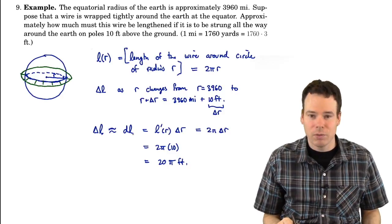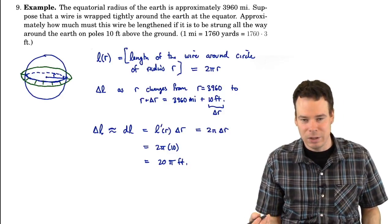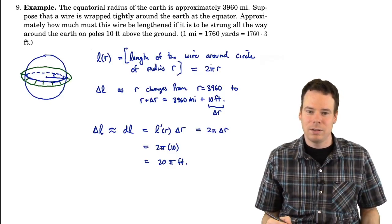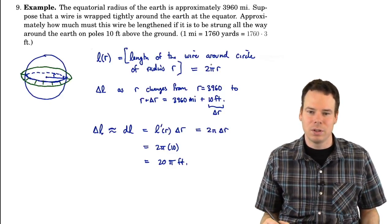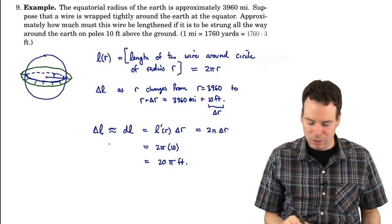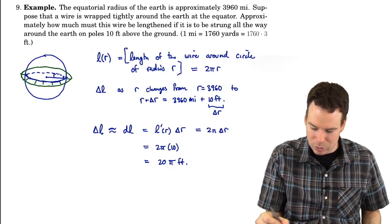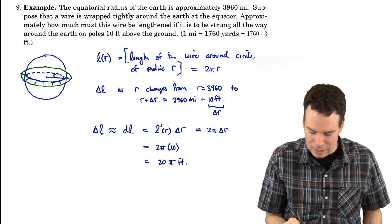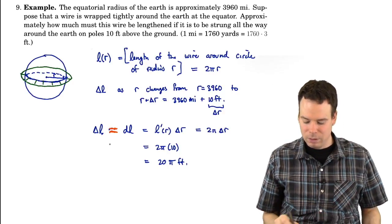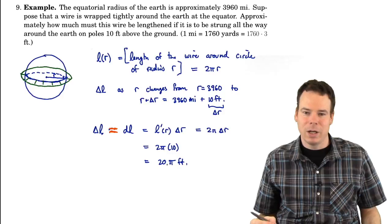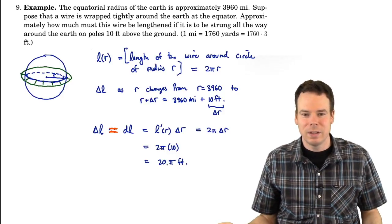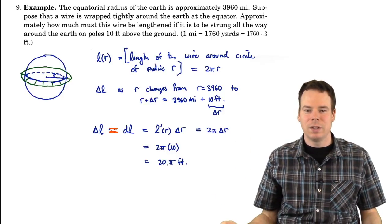In this case, since the circumference function is just linear, you're going to get exactly the same result. The differential uses the tangent line to approximate the function, but if the function is already linear, then the tangent line exactly equals the function. So delta L exactly equals 20 pi feet as well. The change in the length of wire is 20 pi feet. That's it for this section — thank you very much for watching, and we'll see you again next time.